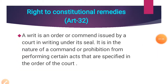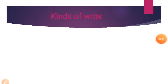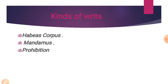We discussed about the right to constitutional remedies. Under Article 32, a writ is an order or command issued by a court in writing under its seal. It is in the nature of a command or prohibition from performing certain acts specified in the order of the court. A writ is classified into five kinds: Habeas Corpus, Mandamus, Prohibition, Certiorari, and Quo Warranto.